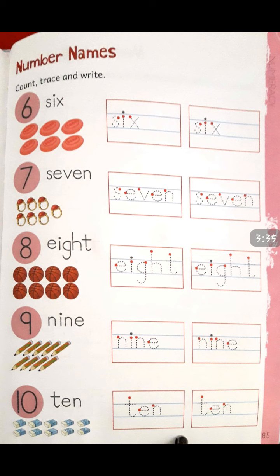These are called number names. 9 — there are 9 pencils. Firstly count the pencils, then trace the number 9, and trace the spelling of 9. After that, 10 — there are 10 erasers. Count the erasers and trace the spelling of 10.